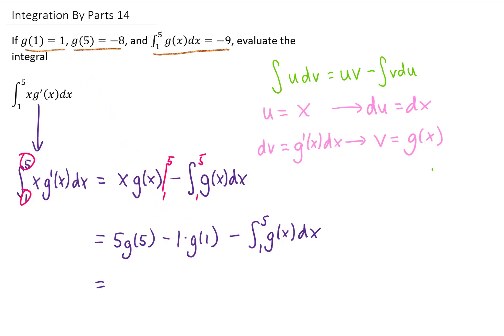So we can plug all those values into what remains, and we get 5 times negative 8, minus 1 times 1, minus the value that we were given for this integral, which was negative 9. And now evaluating this, and adding up all of those numbers, I think is giving me a negative 32 as my final answer.